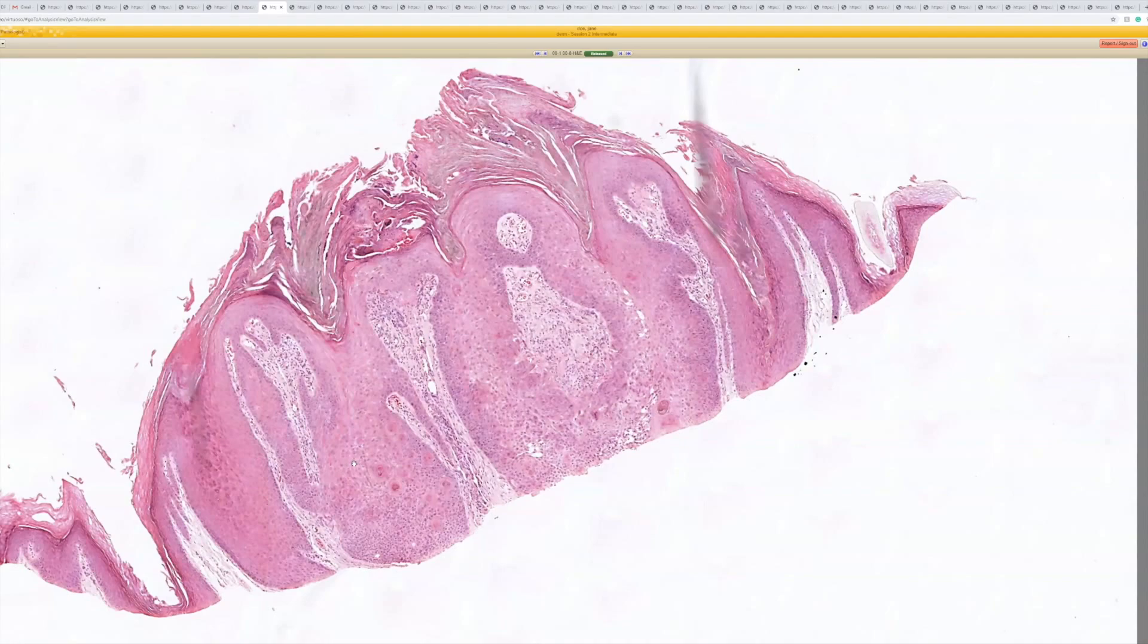One is trichilemmoma. Trichilemmomas have a warty surface like this, and when they get irritated, they can kind of give this a bit of a squamous eddy look, and they have some outer root sheath differentiation, obviously, which is analogous to what you can see in an IFK, which kind of is growing down into a follicle structure or recapitulating a follicular growth.